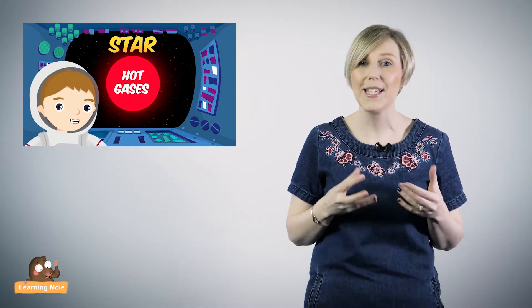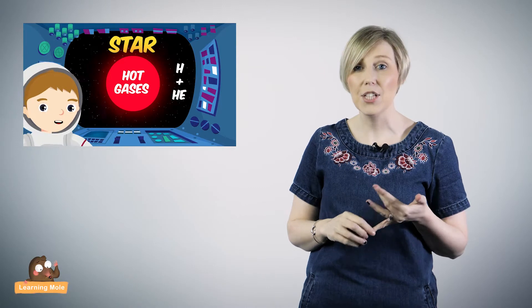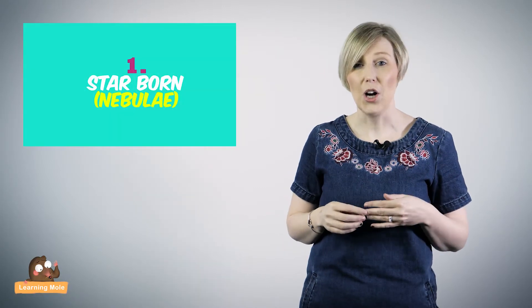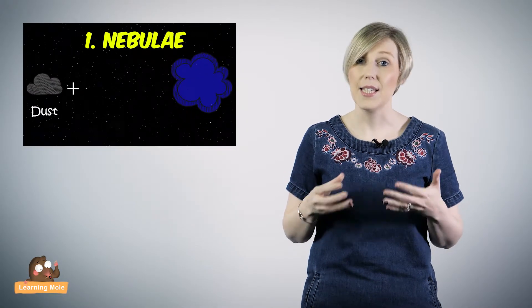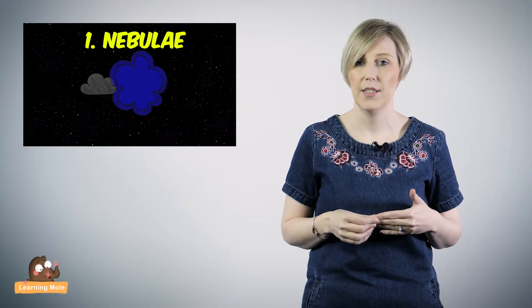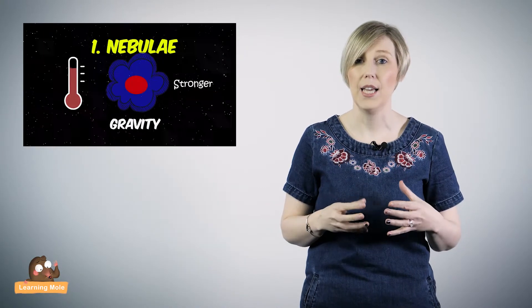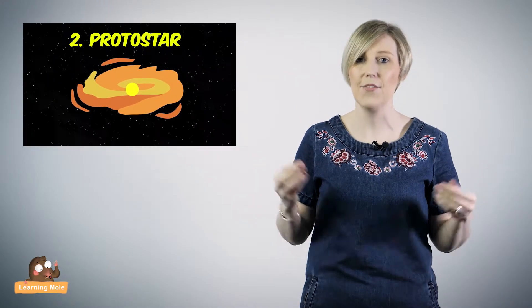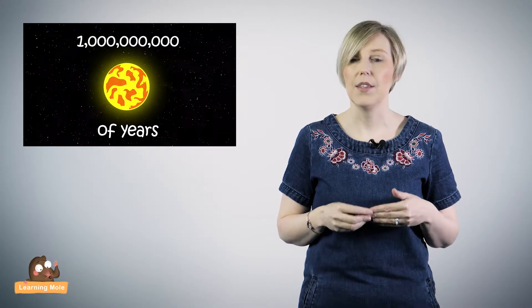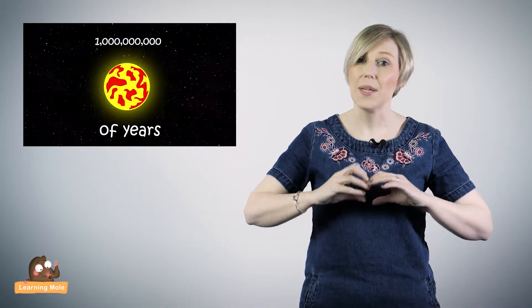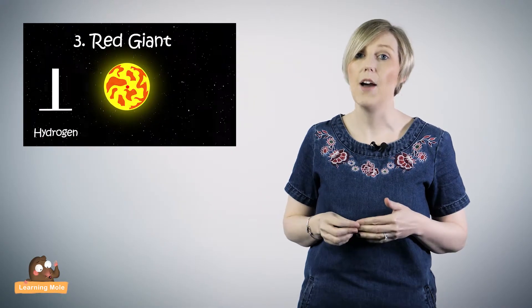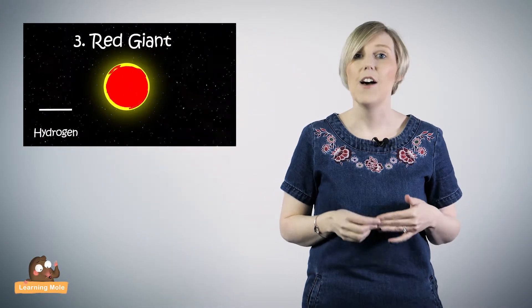Stars are actually giant spheres of super-hot gases like hydrogen and helium. Stars have a life cycle. First, they are born. This is called a protostar. Once created, the star continues to burn energy and glow brightly for billions of years. When all the hydrogen runs out, the star will start to expand on the outside and become a red giant. Finally, the star will collapse and become a white dwarf star.